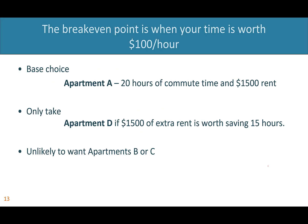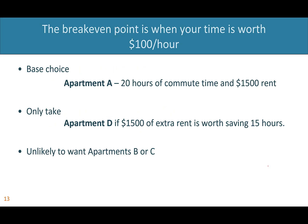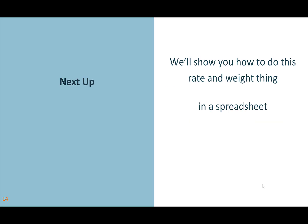Alternatively, you could say: 'As a base choice, take apartment A — 20 hours of commute time and $1,500 in rent. But consider apartment D, and only take it if an extra $1,500 in rent is worth saving 15 hours a month. If it is, go with apartment D, and you're unlikely to want apartments B or C.' In both examples, we're walking decision makers through the marginal rates with real values they can relate to. Next up, we'll show how to do this normalization and weighting — technically called multi-attribute value theory — in a spreadsheet.